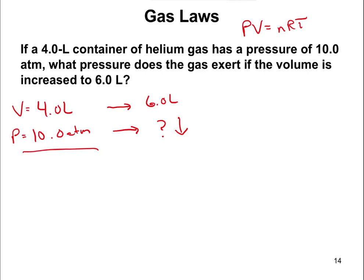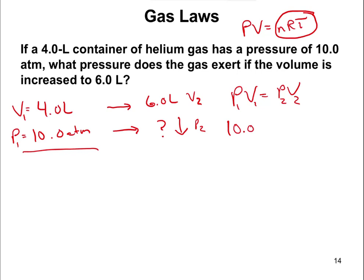The other variables stay constant, so PV equals PV, or P1V1 equals P2V2. We call the initial state P1 and V1, and the new volume is V2, while P2 is what we're solving for. Plugging in: P1 is 10.0 atmospheres, V1 is 4 liters, and V2 is 6.0 liters.